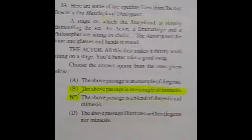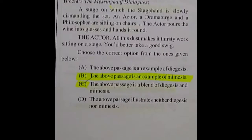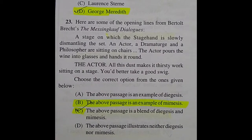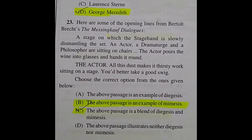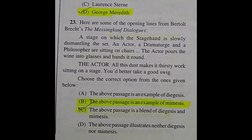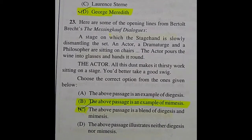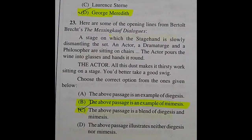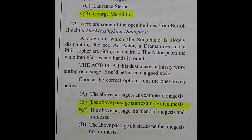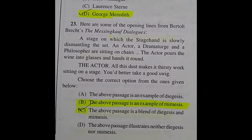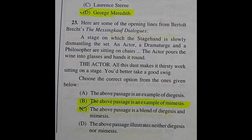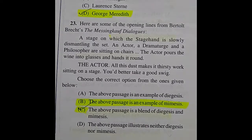Question 23: Here are some opening lines from Bertolt Brecht's 'The Messingkauf Dialogues': 'A stage on which the stage hand is slowly dismantling the set. An actor, a dramaturgy, and a philosopher are sitting on chairs. The actor pours the wine into glasses and hands it round. The actor: All this dust makes it thirsty work sitting on a stage — you'd better take a good swig.' The right answer is option B: the above passage is an example of metatheatre.